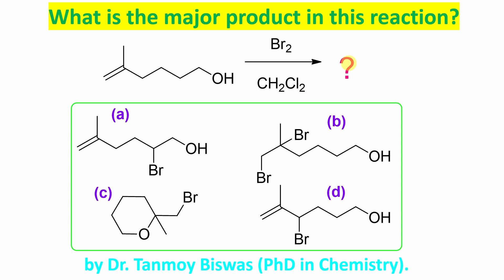Today it's a very interesting MCQ. It is very easy, but very interesting. You'll gain lots of understanding and knowledge from this video. Now if you look at this reaction, this is your starting material. It has two functional groups. One is this alkene, and another is this alcohol. The reaction takes place with Br2 in CH2Cl2, which means it's called dichloromethane or DCM, and it is acting here as solvent.